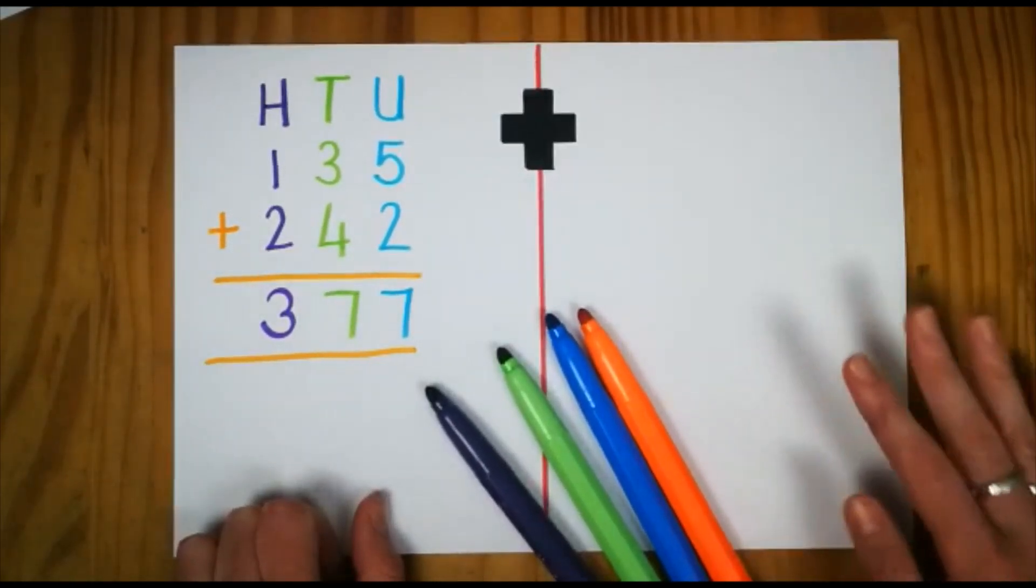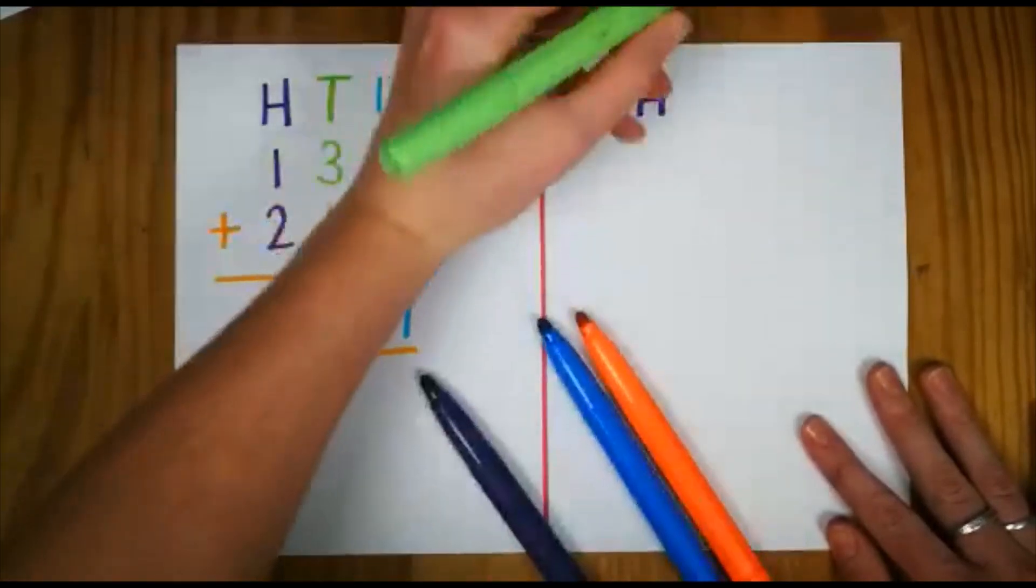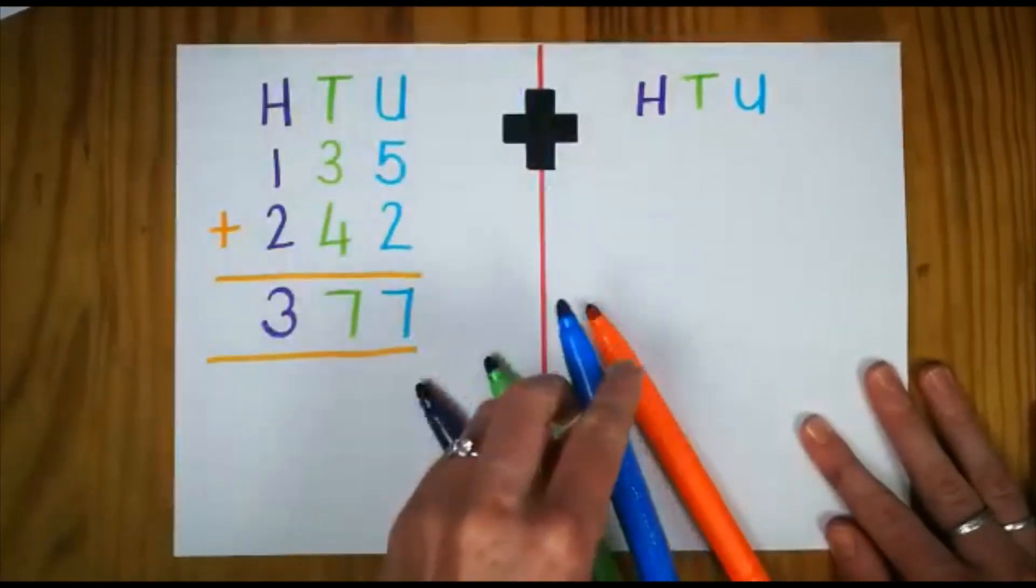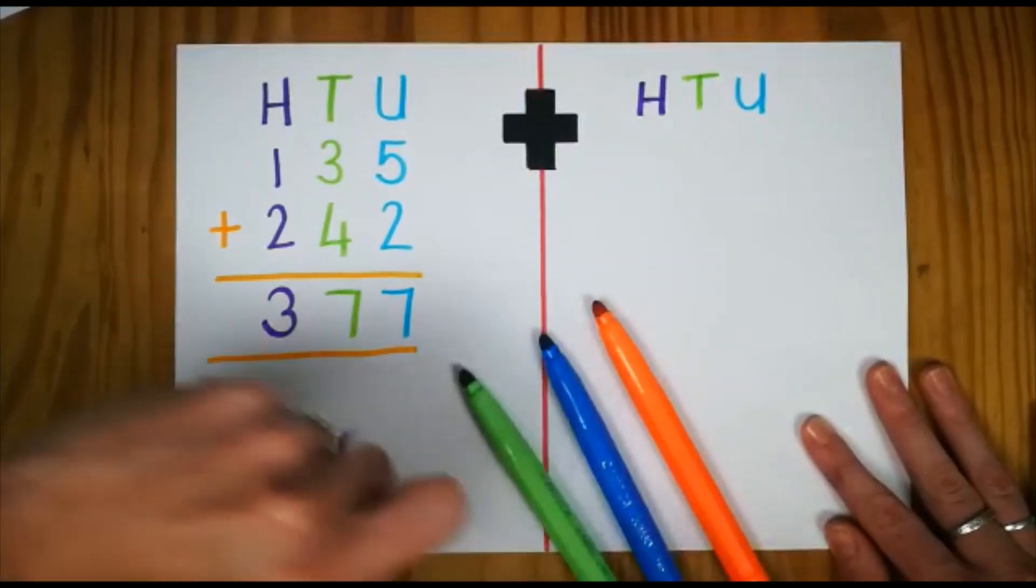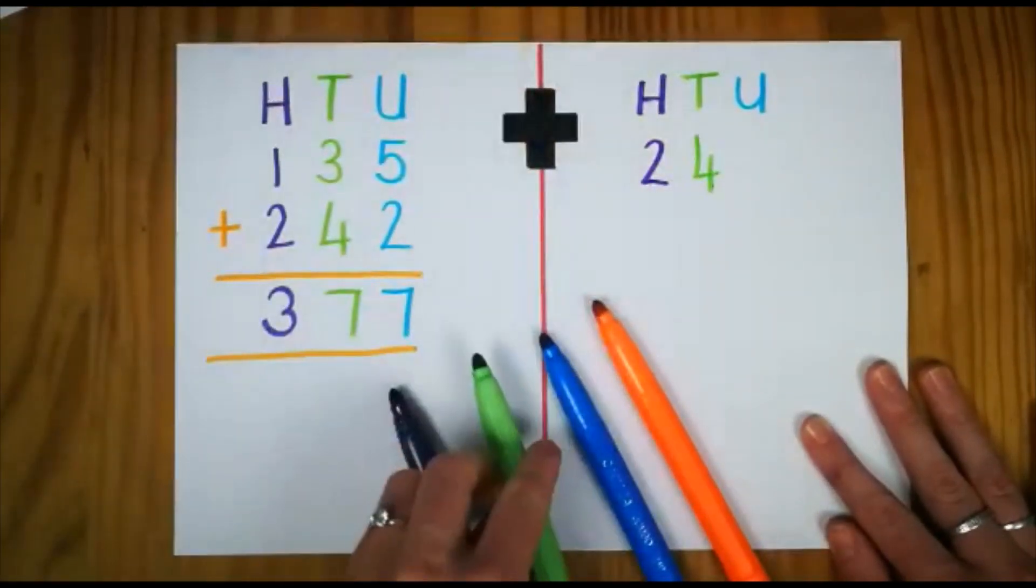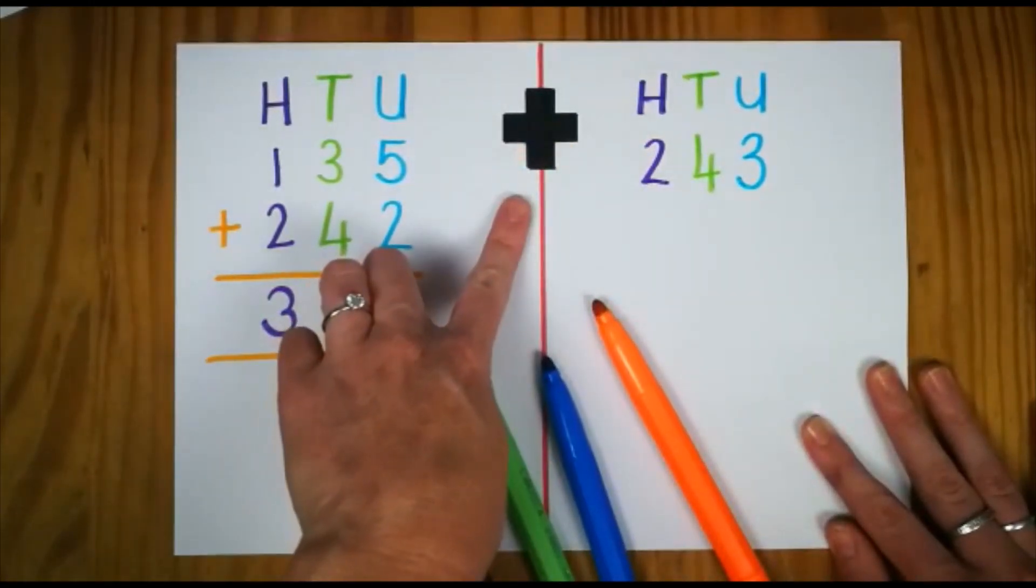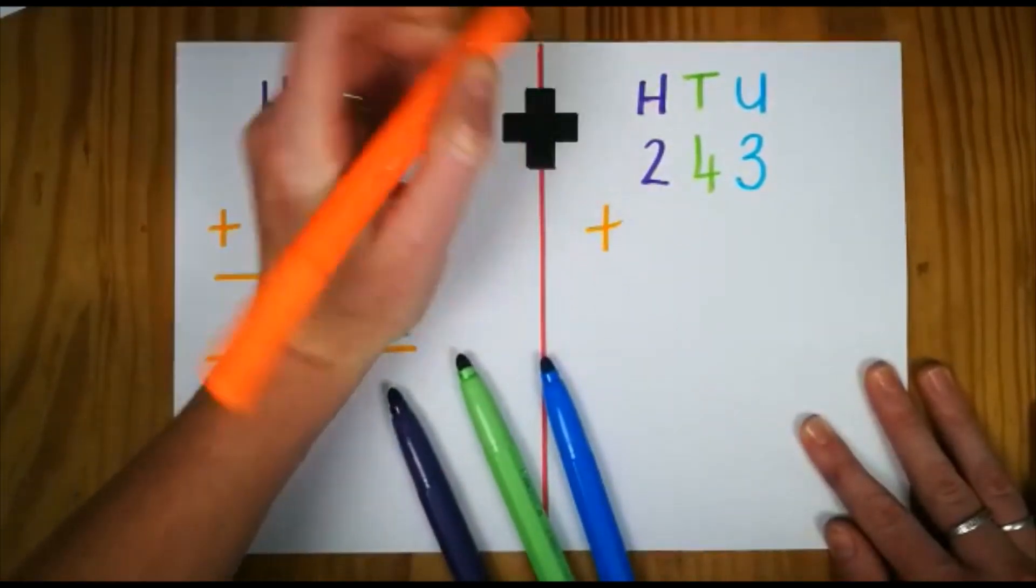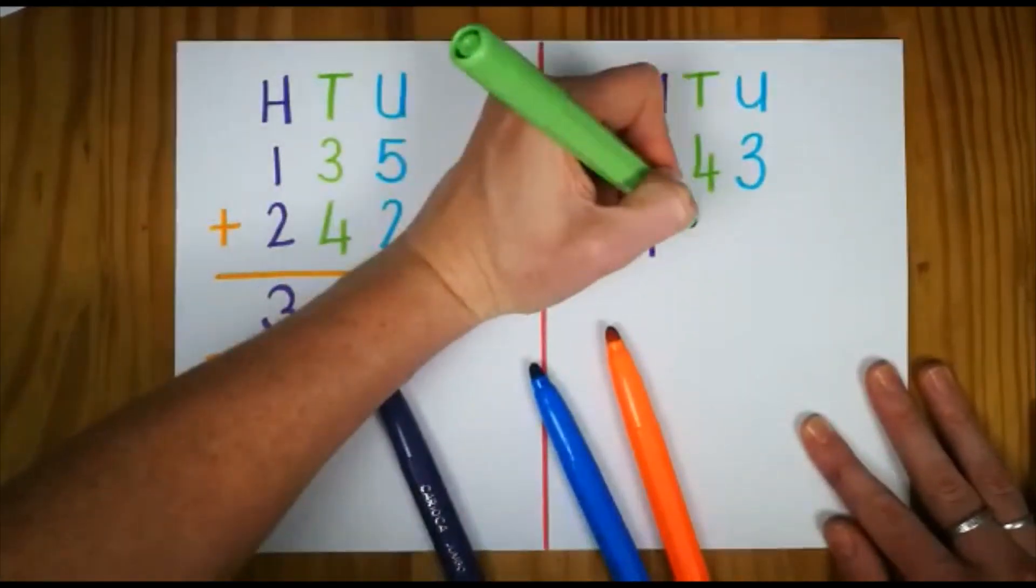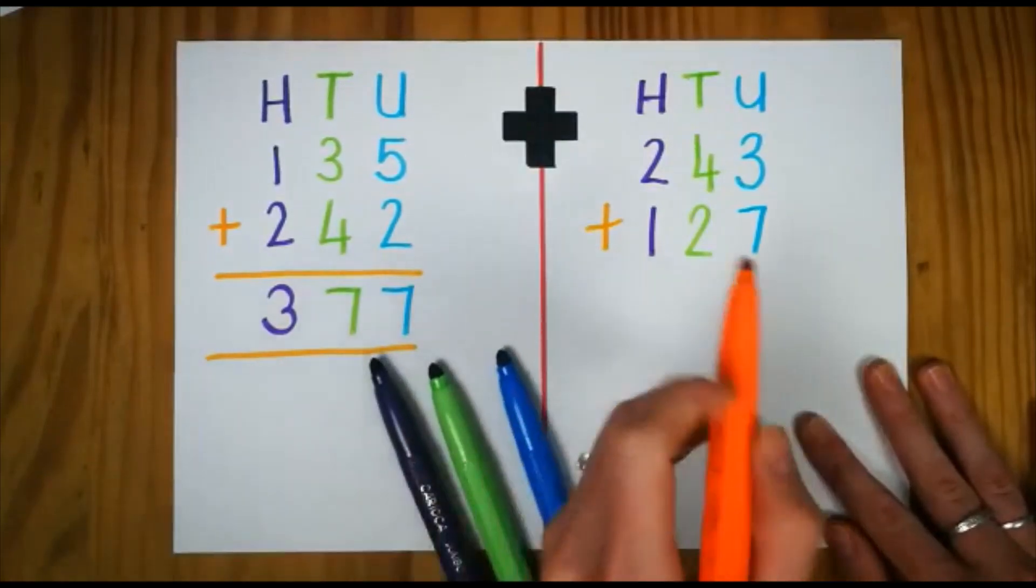So I'm going to give you another sum today. We're also going to do hundreds, tens, and units. Now our sum is going to get a little bit bigger. We're going to say two hundred and forty three. We know that we are doing an addition sum, a plus sum. So I'm going to add my operational sign, plus one hundred and twenty seven.